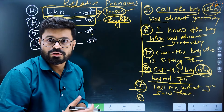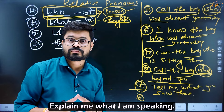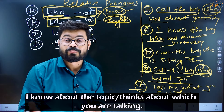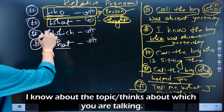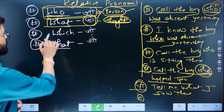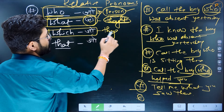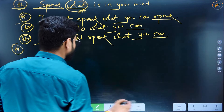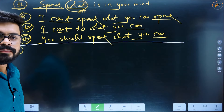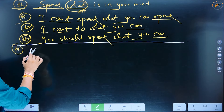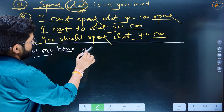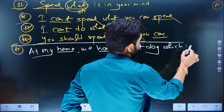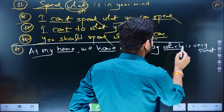Explain me what I'm speaking. I know about the topic — about what you are talking. So basically, 'what' ka matlab hota hai 'jo'. Next is 'which'. Which is used with things and animals — vastuon aur janwaron ke sath. At my home, we have a pet dog which is very sweet.